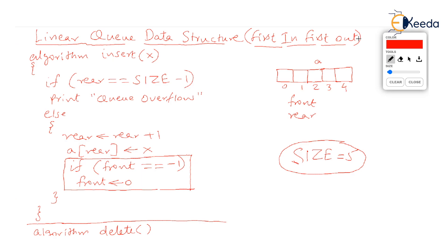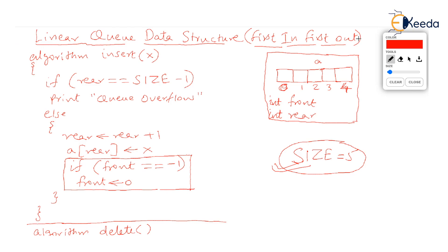To build a queue, we declare an array — let 'a' be the name of the array. We declare a constant called SIZE equal to 5, so we have an array of size 5, with elements ranging from index 0 to 4. Along with the array, we have two integer variables, front and rear, which tell us where the frontmost and rearmost elements are in the queue.